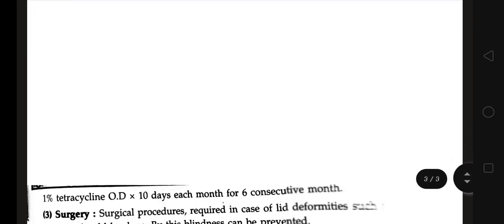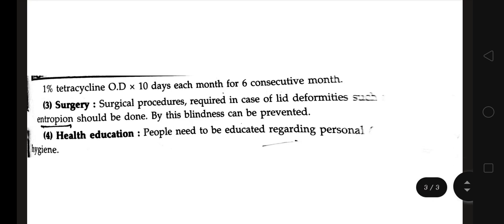Mass treatment regimens include 1% tetracycline twice a day for five consecutive days each month, or 1% tetracycline once per day for 10 days each month for six consecutive months. Surgery is required in cases of lid deformities such as entropion or ectropion; performing surgery in these cases can prevent blindness as a complication.